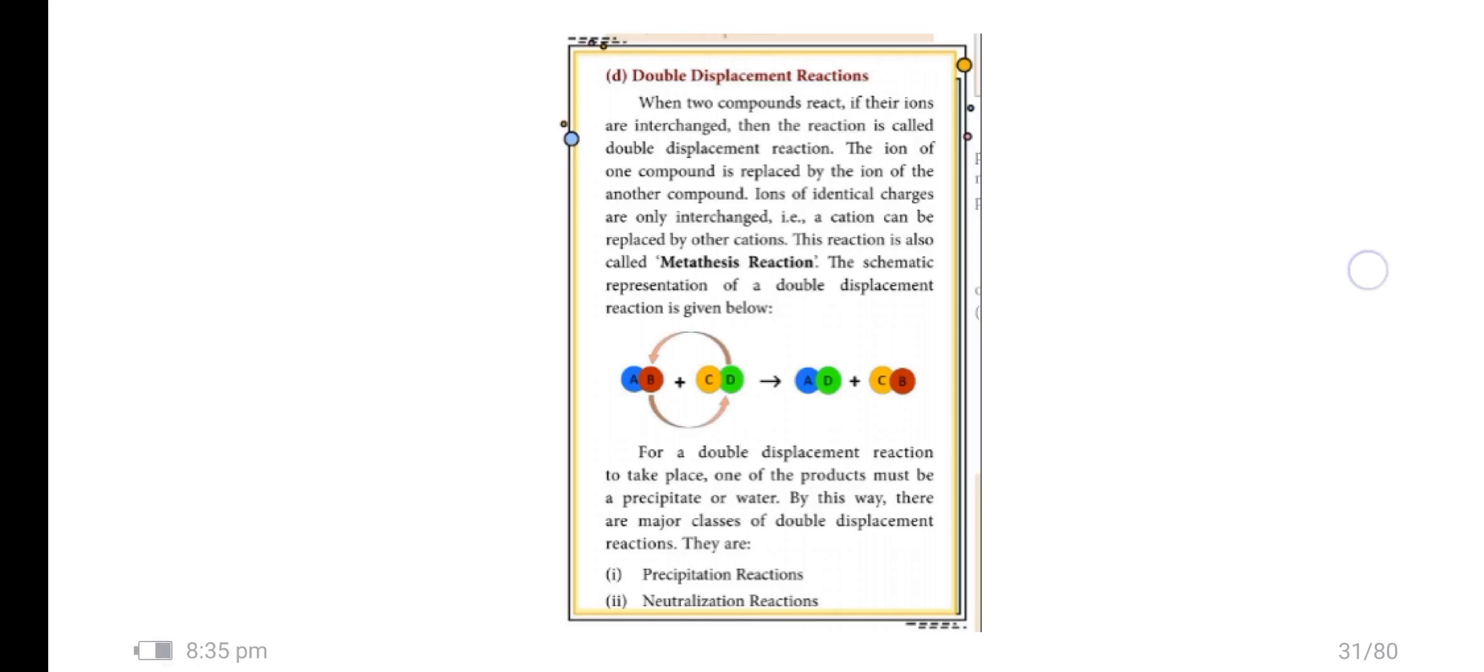Double displacement reaction. When two compounds react and their ions are interchanged, then the reaction is called double displacement reaction. The ion in one compound is replaced by the ion in another compound. Ions of identical charges are only interchanged. That is, cation can be replaced by other cation. This reaction is also called metathesis reaction. The schematic representation of the double displacement reaction is given below.